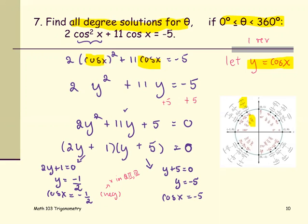For the third quadrant, the first coordinate as negative 1 half, the degree angle will be 240 degrees. The first equation gives us the solutions. X equals 120 degrees and x equals 240 degrees.